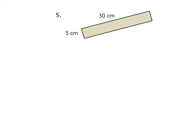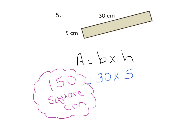Here's number five in your GoMath book. We have a base of 30 centimeters and a height of 5 centimeters. Press play when you're ready to go over the answer. I multiplied 30 times 5 by doing 3 times 5, which is 15, then adding the zero. Your answer should have been 150 square centimeters.